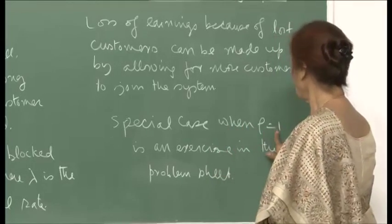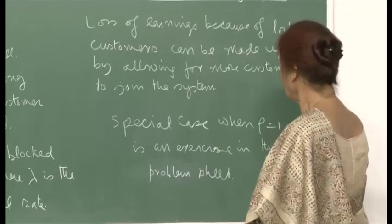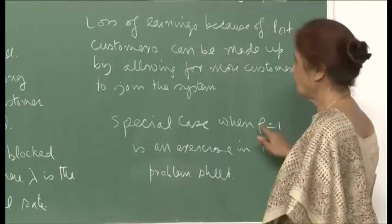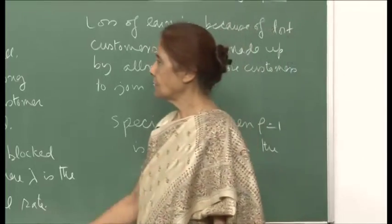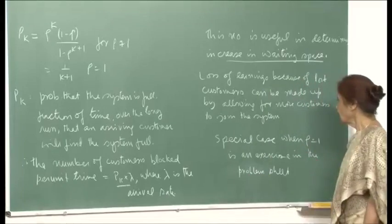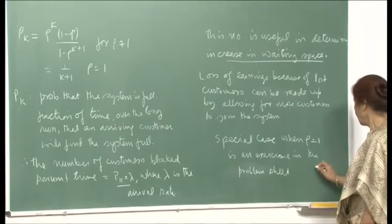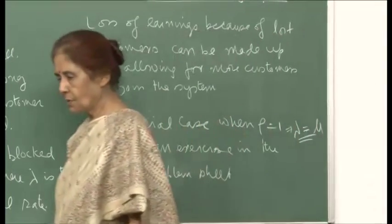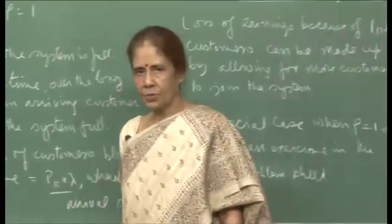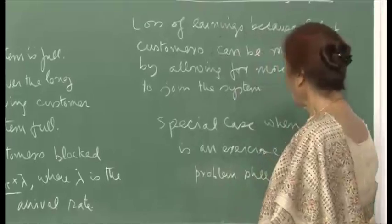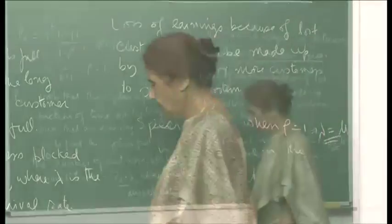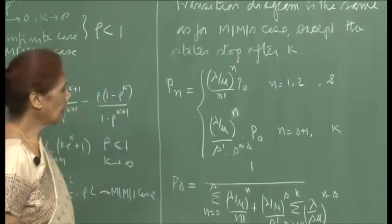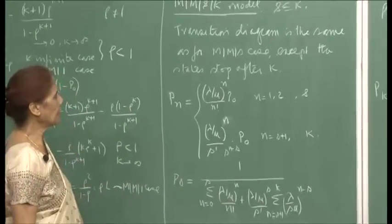The special case when rho equals 1 is exercise 9 in the problem sheet, which we will discuss at the end of this lecture. When rho equals 1, that implies lambda equals mu. There is no question of the system blowing up because it is a finite space model. Now I will mention the MMSK model — I will not go into detail but write down the formulae for completeness.